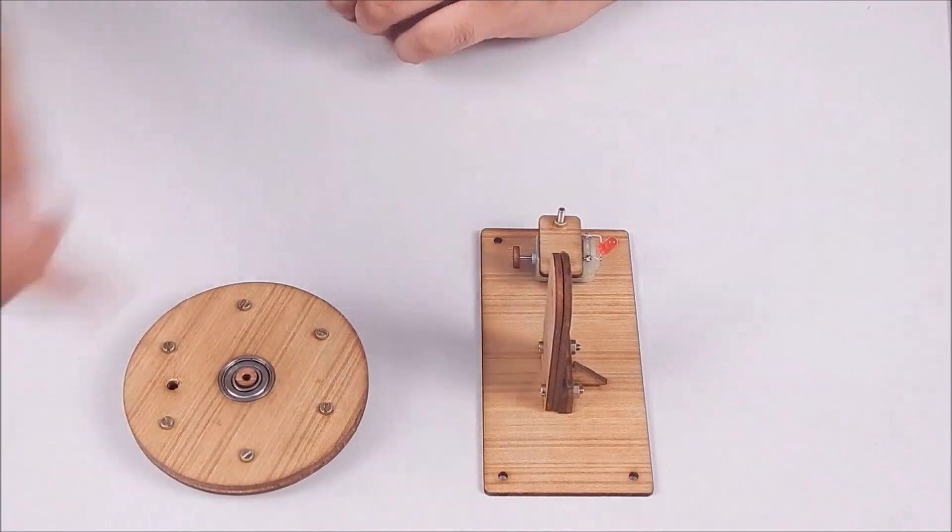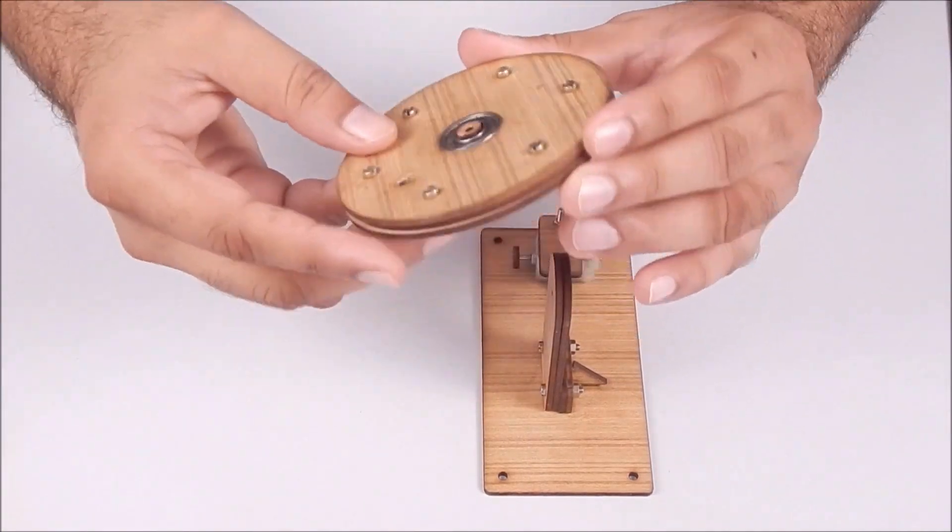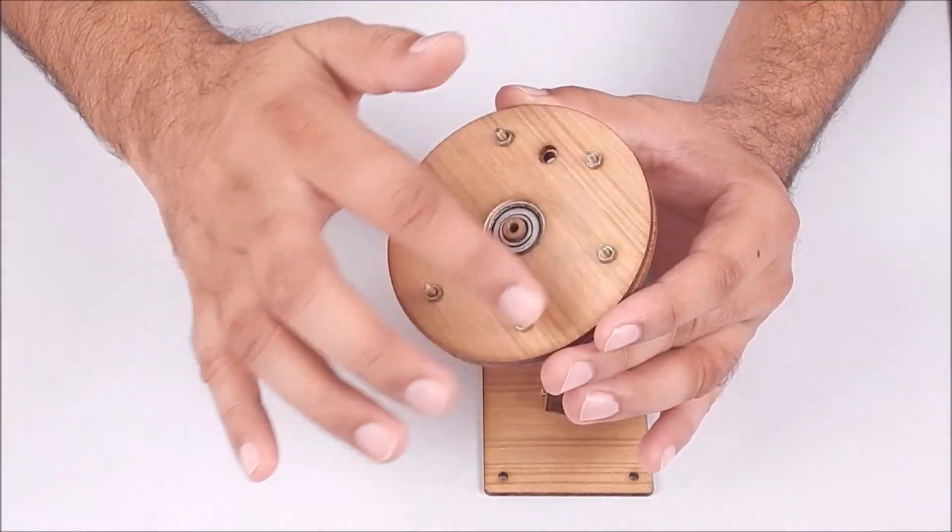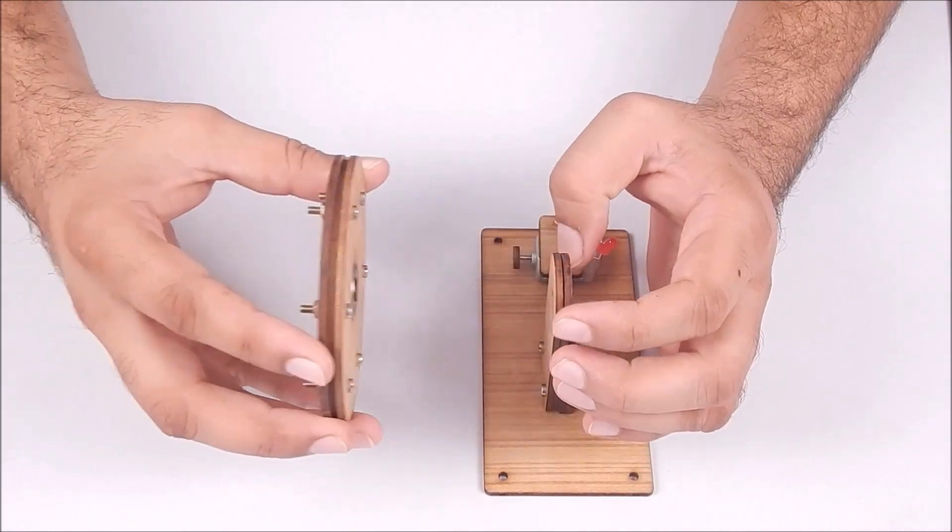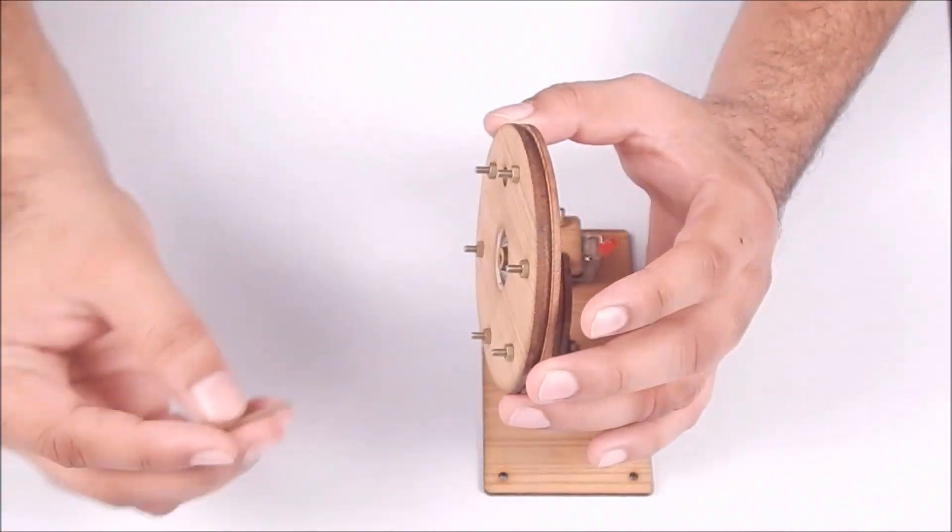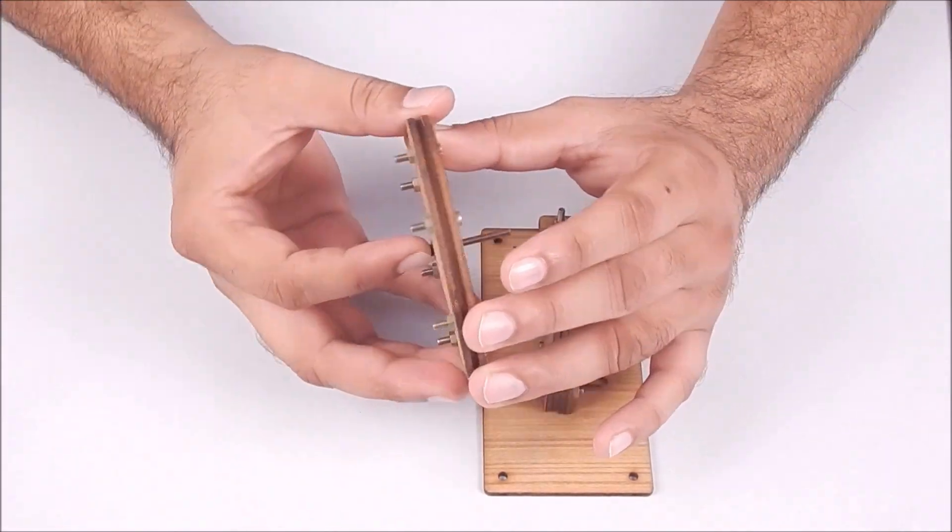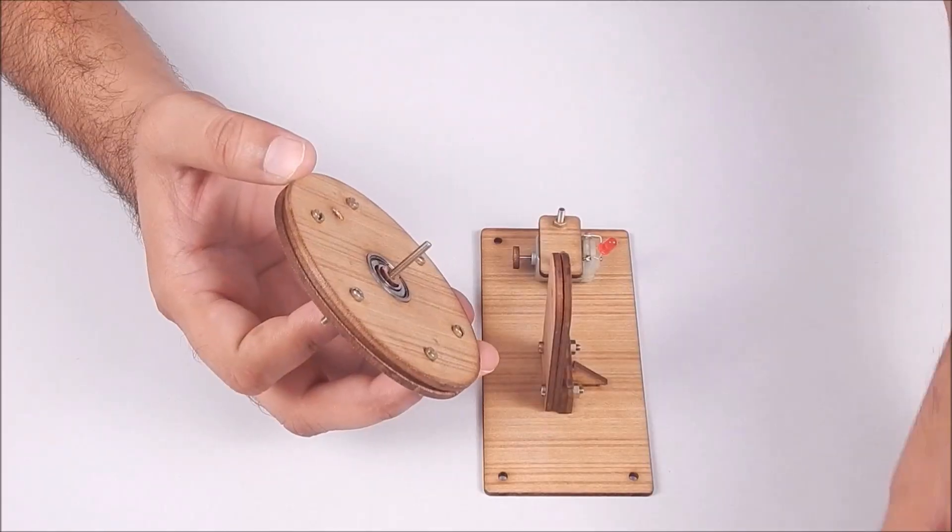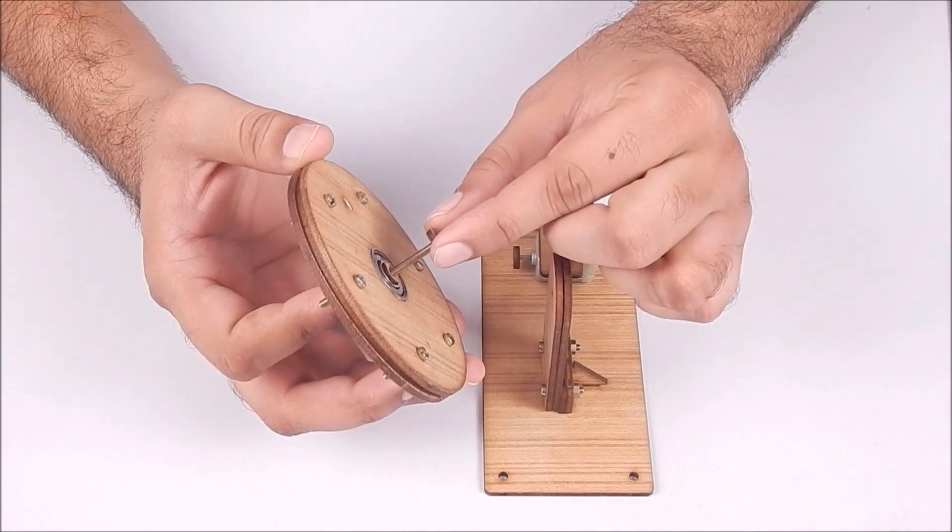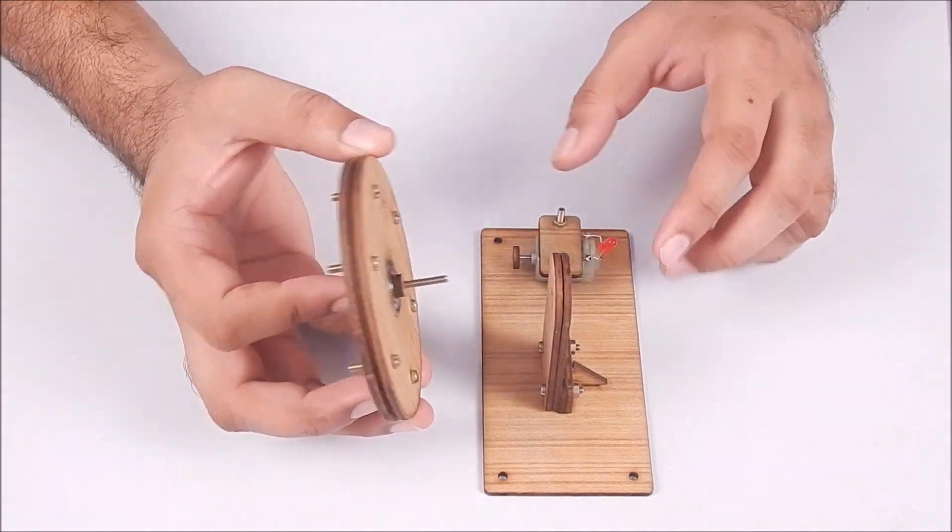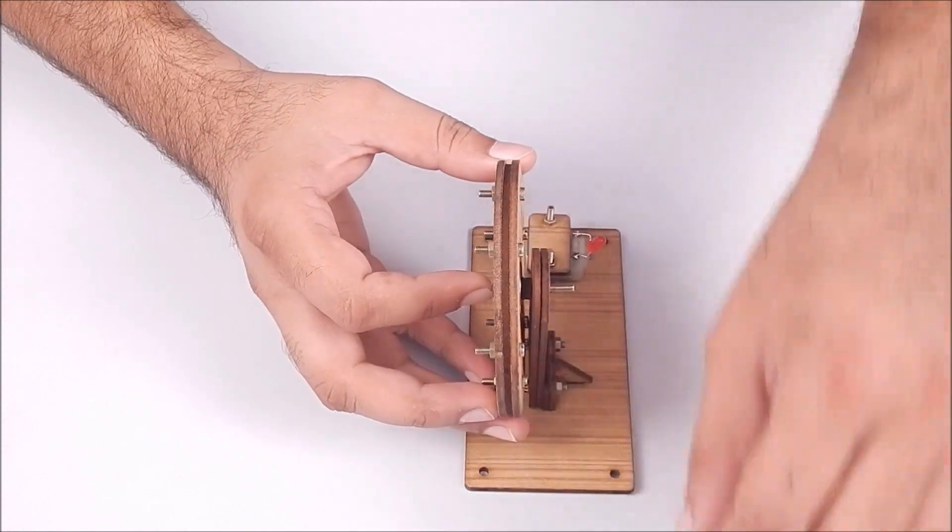Now we have to fix the wheel. While fixing the wheel, make sure that you keep the wheel's long bolts to the outer side. Use the M3 30 length bolt to fix the wheel. Also insert the small wooden washer to make sure that the distance can be maintained between the wheel and the stand.